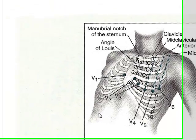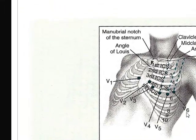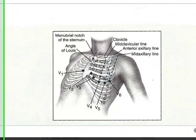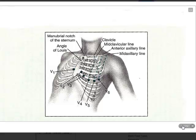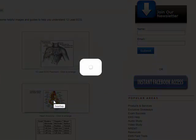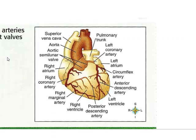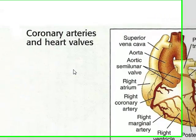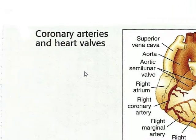Here is a quick graph that just shows you the lead placement for V1 through V6 and shows you the intercostal spaces in relationship to where the leads are going to be placed on the body.